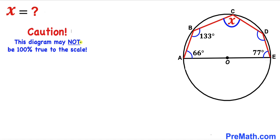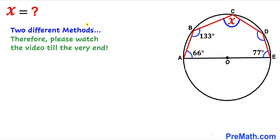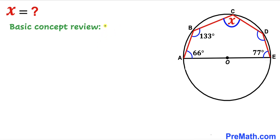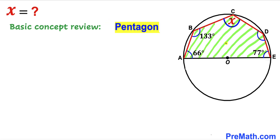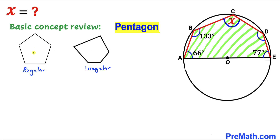Please keep in mind that this figure may not be 100% true to scale. I'm going to share two different approaches, so please watch the video till the very end. Let's focus on this polygon — we can see it has five sides, so we call it a pentagon. There are two types: a regular pentagon with all equal side lengths, and an irregular pentagon whose side lengths are not the same. We are dealing with an irregular pentagon.